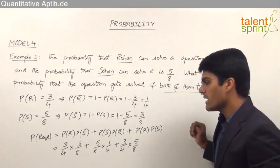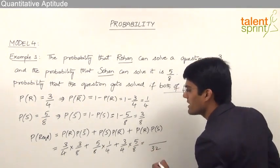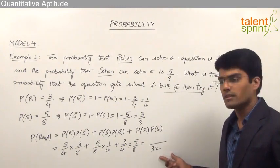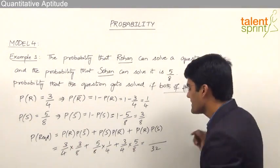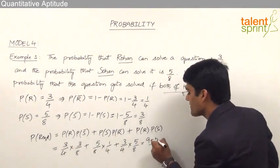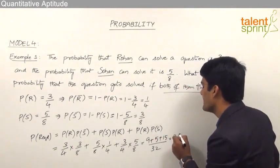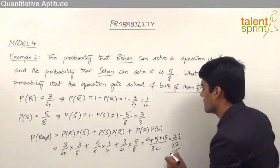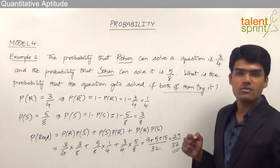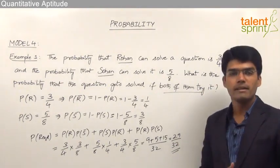Simplifying this, the LCM is 32. So we get 3 into 3 is 9, plus 5 into 1 is 5, plus 3 into 5 is 15, giving a total of 29 by 32. So the probability that the question gets solved if both of them try it is 29 by 32.